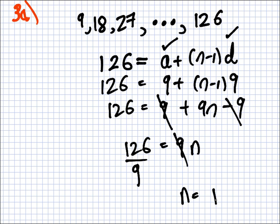That's nice because 9 minus 9 is gone. So, you have 126 equals 9N. So, finally, it's 126 divided by 9. What's that? 14. So, it's 14 terms then. You should write that down if you need to write that down.